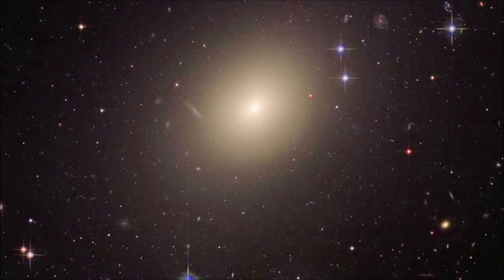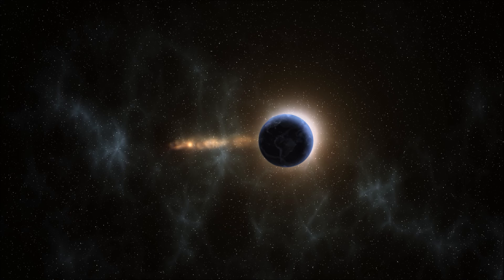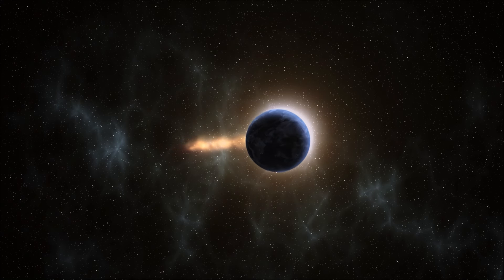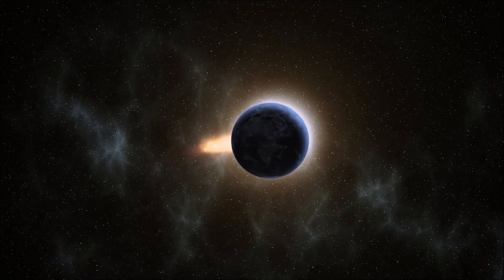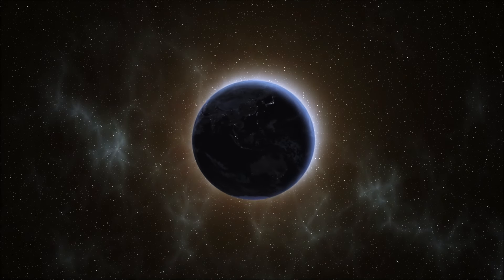When galaxies collide, the space between stars is usually so vast that the majority of stars in each galaxy remain unscathed. As such, the same stars can be present in a giant elliptical galaxy that began life in a dwarf galaxy billions of years before.